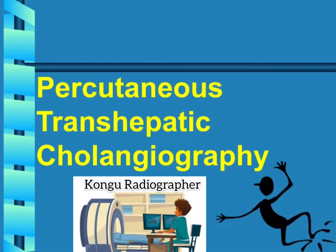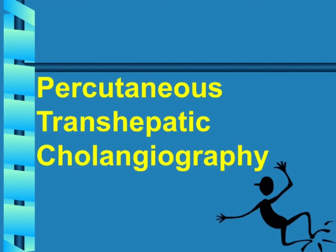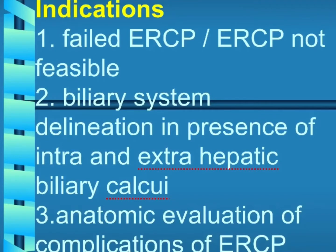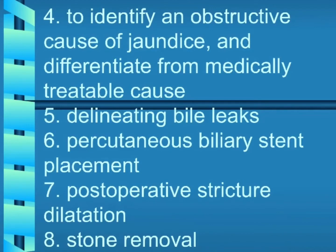Welcome to the Cougar Radiographer channel. Today's topic is Percutaneous Transhepatic Cholangiography. Indications include: one, failed ERCP; two, biliary system delineation in presence of intra- and extra-hepatic biliary calculi; three, anatomic evaluation of complications; four, to identify an obstructive cause of jaundice and differentiate from a medically treatable cause; five, delineating bile leaks; six, percutaneous biliary stent placement; seven, post-operative stricture dilatation; eight, stone removal.